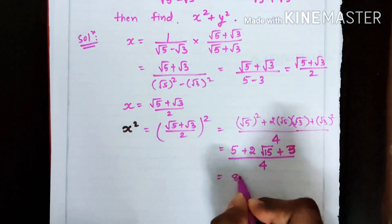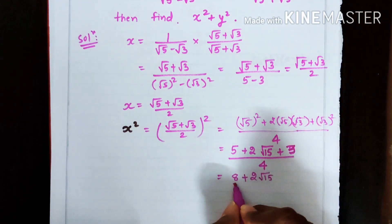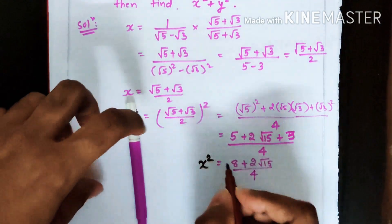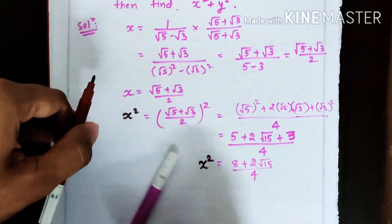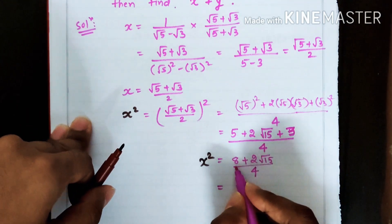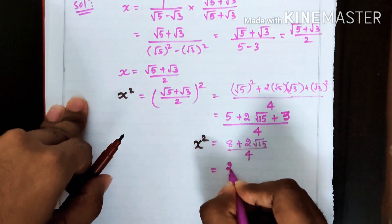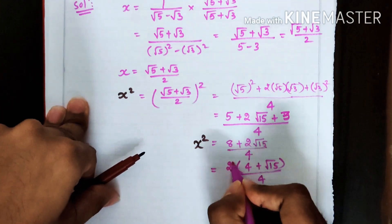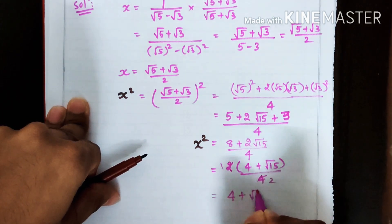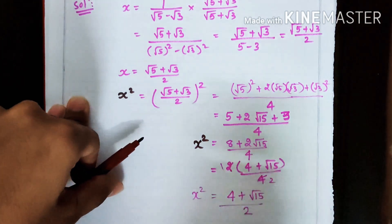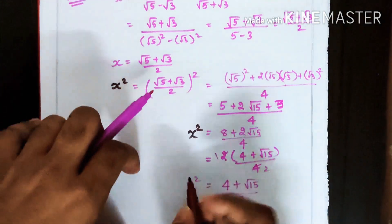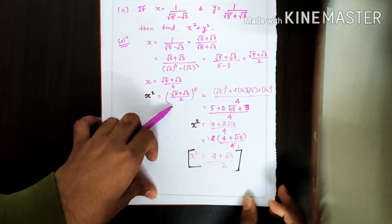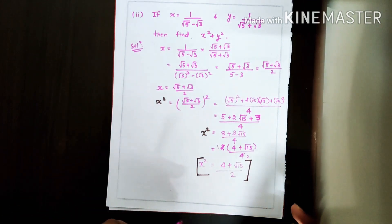Combining like terms in the numerator: 5 + 3 = 8, so we get (8 + 2√15) / 4. We can simplify by taking 2 as common from the numerator, giving 2(4 + √15) / 4 = (4 + √15) / 2. So x² = (4 + √15) / 2.